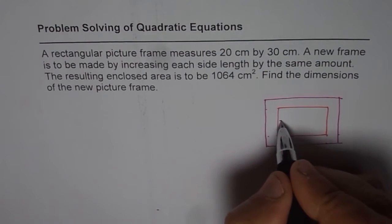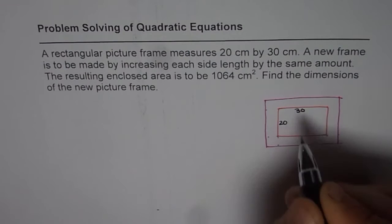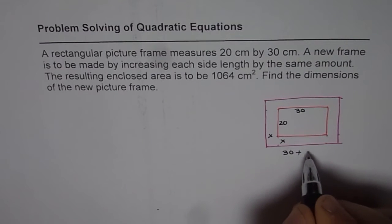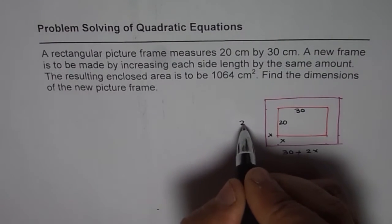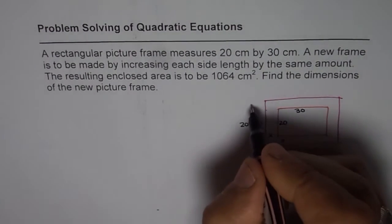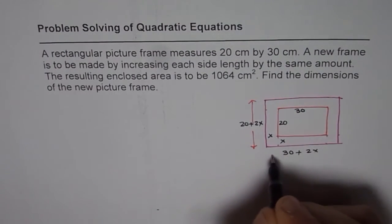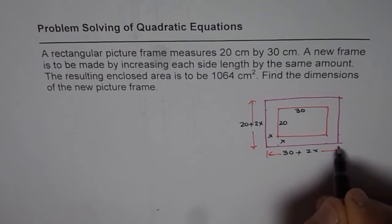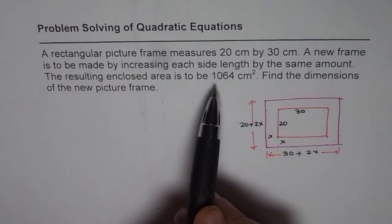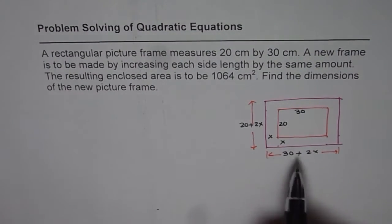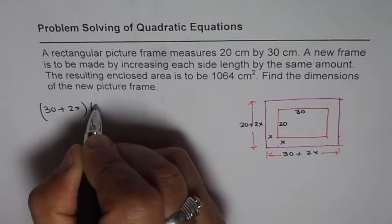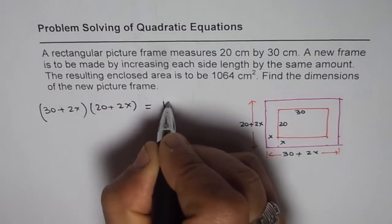So we are given here that this dimension is 20 by 30. If we increase by x on both sides, then we will have 30 plus 2x on this side and we will have 20 plus 2x on the other side. So that becomes the dimensions for the increased frame. Now the question is, the resulting enclosed area is to be 1064 cm squared. So that means area will be (30 + 2x) times (20 + 2x) and that should equal 1064.